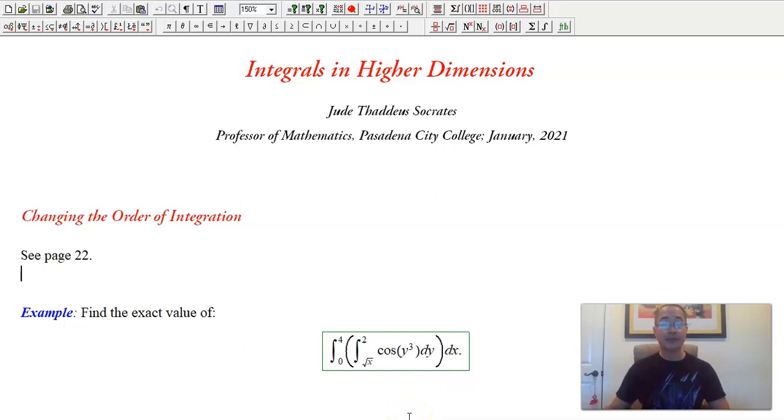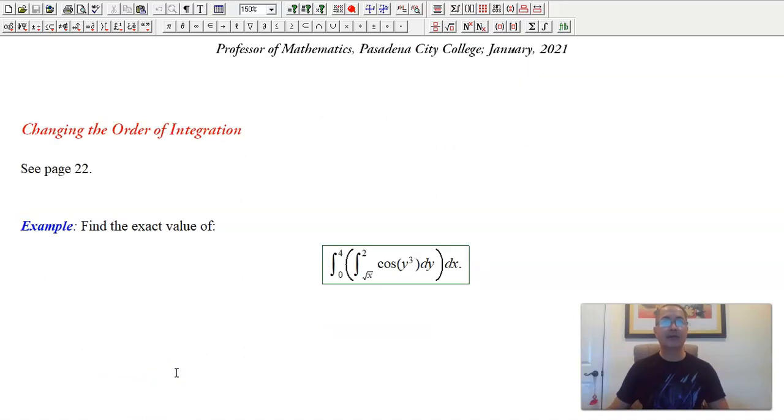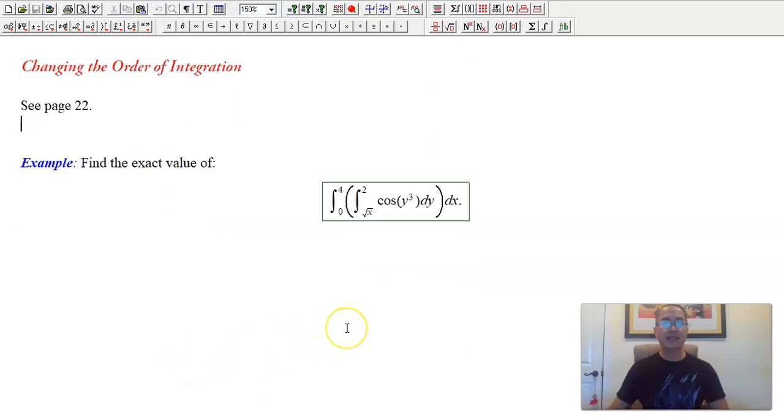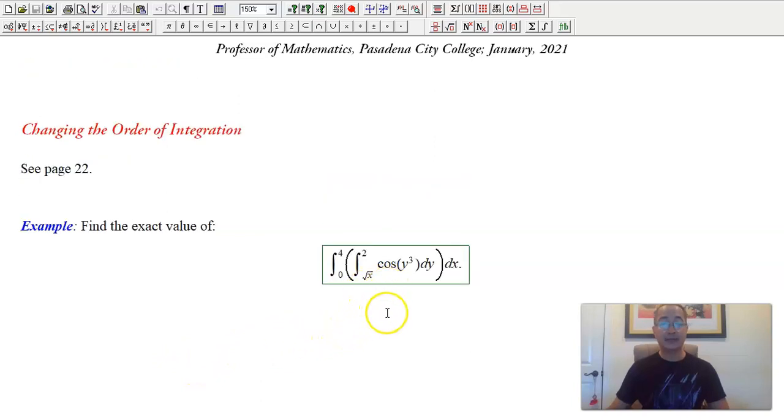So we're basically just going to look at one example. It's going to be a short video for a change, and we are at page 22 of our PDF. So we're not really going to need our PDF today. Here's an example which is kind of similar to what I have over there, only in the sense that it involves the cosine function, but that's about it.